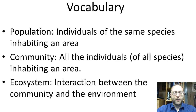An ecosystem is the interaction between the community and the environment. So that would include the community of squirrels, all the plants, all the insects. It would also include the environmental factors like the climate, the rainfall, the temperature, the amount of sunlight that reaches, say, the courtyard — all of the non-living factors, all the abiotic factors.